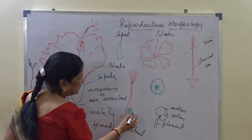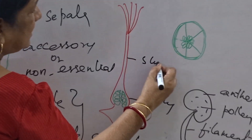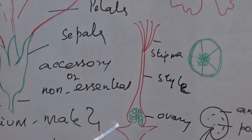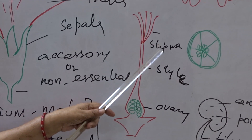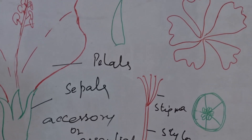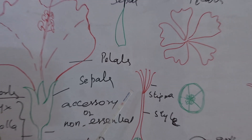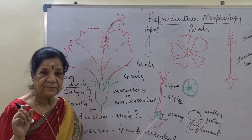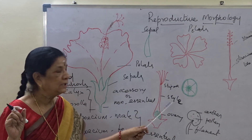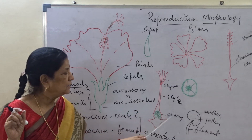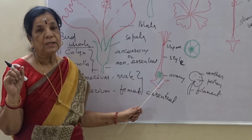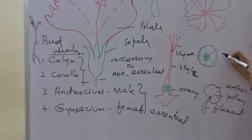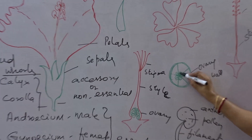When we come to the gynoecium, there is a basal, swollen ovary, a long style, ending in a stigma. So the gynoecium has a basal swollen ovary, a style, and ending in the stigma. There are five stigmatic branches. The ovary contains the ovules, which are arranged inside — this is the outer part called the ovary wall, and these inside are the ovules.